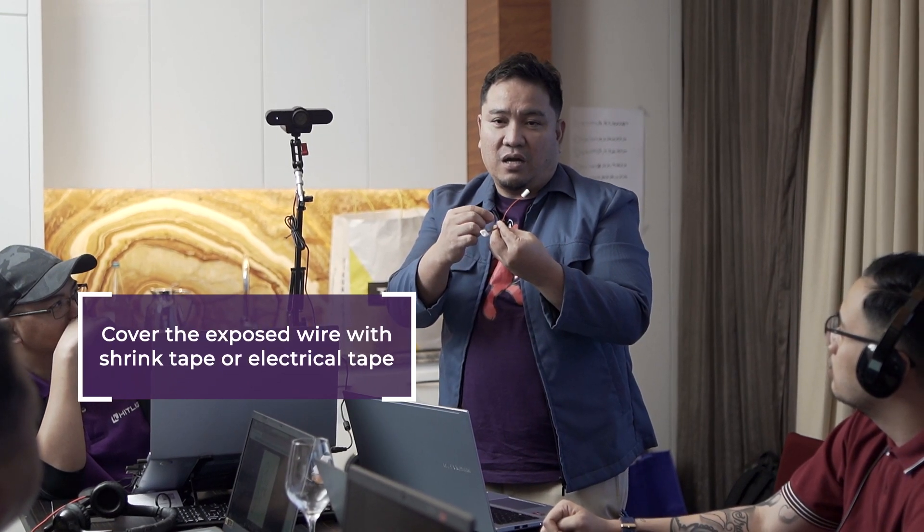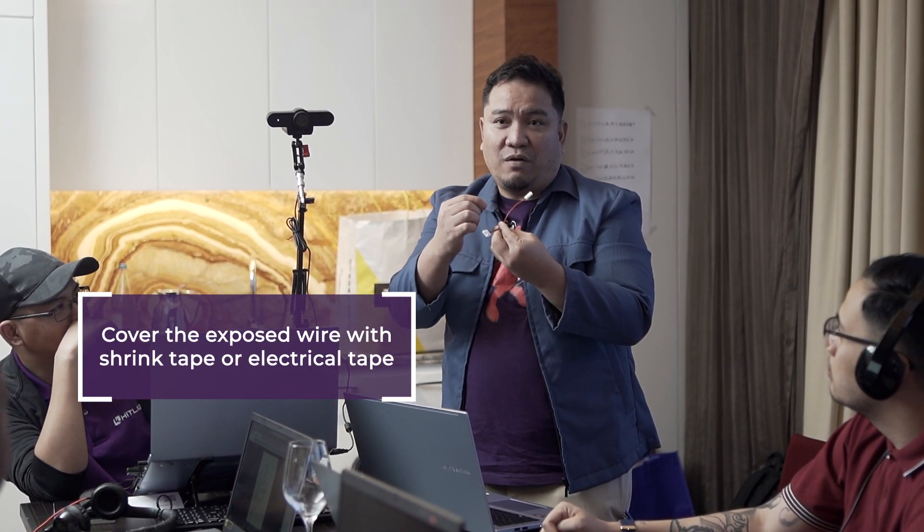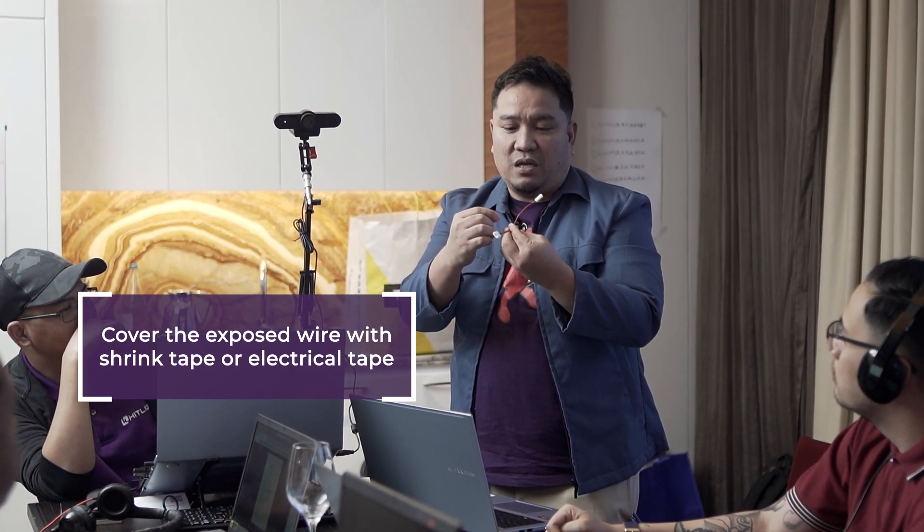The installer would just have to cover it using either a shrink tape or an electrical tape to avoid any interactions or the wires going through with each other and creating a short circuit. And we already have a T-connector.